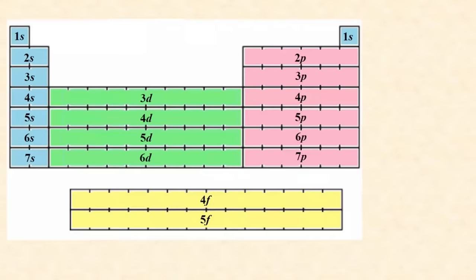You have to know electron configurations. For neon, that's 1s2, 2s2, 2p6. Atoms are usually most stable when they have 8 electrons, or an octet, in their outermost, or valence shell.